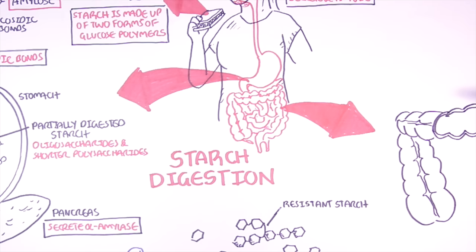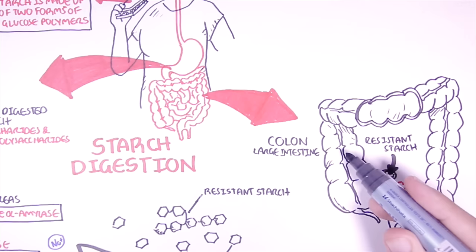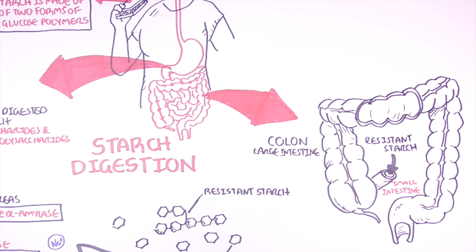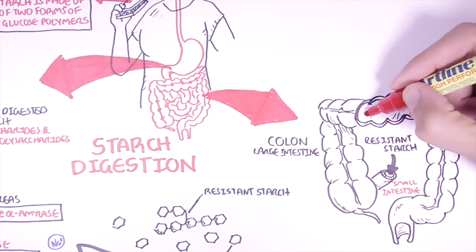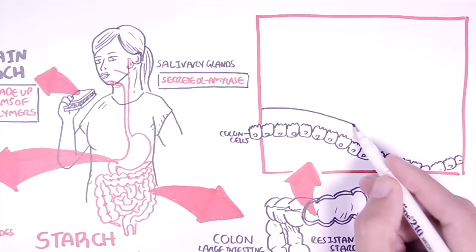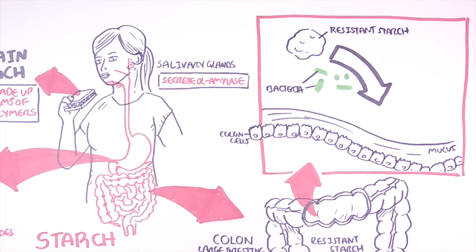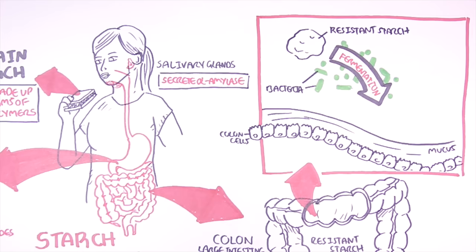So here we are just zooming into the colon. The colon is also known as the large intestine. The resistant starch will reach the colon after escaping digestion in the small intestine. Now within the colon, the resistant starch will actually undergo fermentation by the gut microbiota. So zooming into the colon, here we have the colon cells and the mucus. The resistant starch here will encounter all these bacteria within the colon. And through bacterial fermentation, the bacteria will produce a by-product such as short chain fatty acids, which will be subsequently used by the human body.